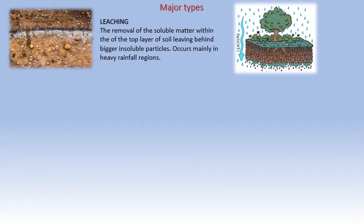Leaching is the removal of soluble material. Always remember it is not the removal of sand — it is the removal of soluble material, because in soil only some parts are soluble. Only that soluble part is removed within the top layer of the soil, leaving behind bigger insoluble particles, and it occurs mainly in heavy rainfall regions. Please note with every type: where does it occur? I cannot see leaching in a desert region because rainfall must always be there and there must be presence of soluble material. So this is leaching.